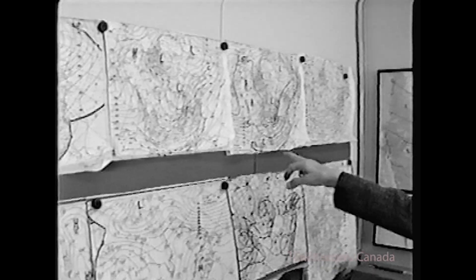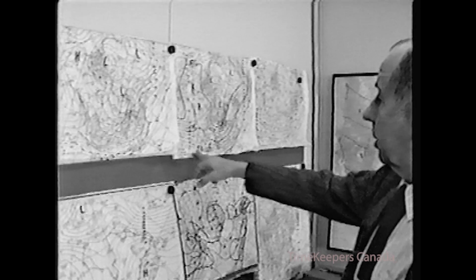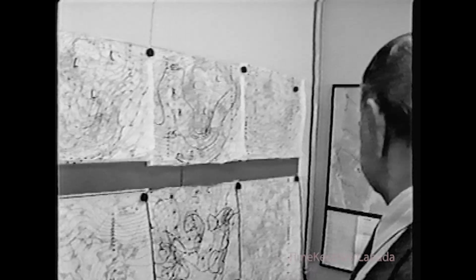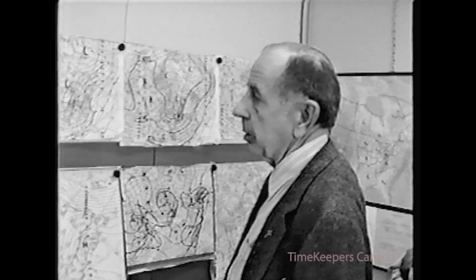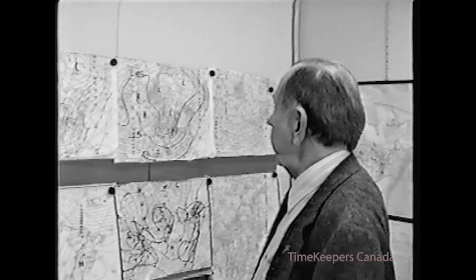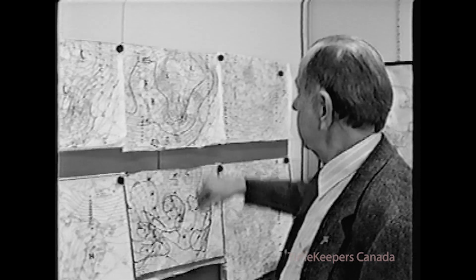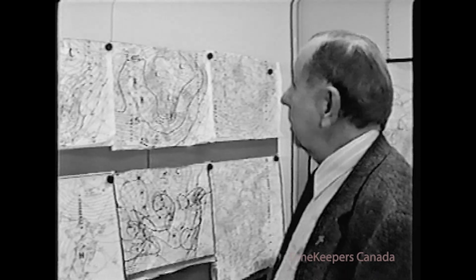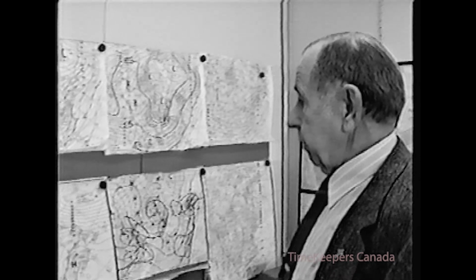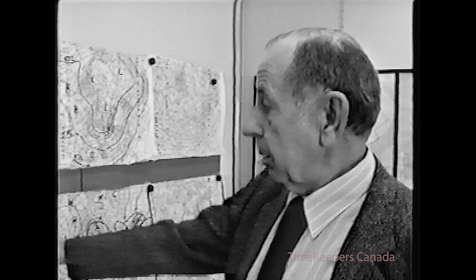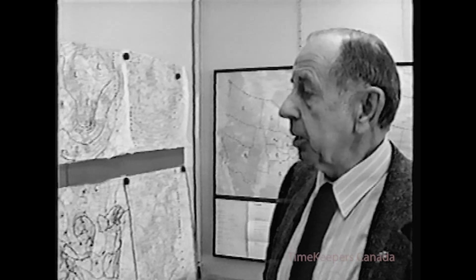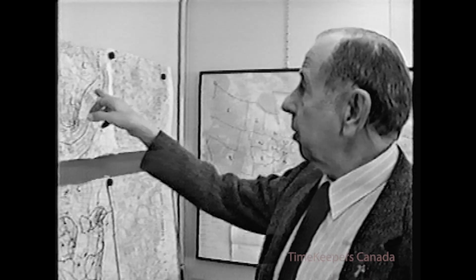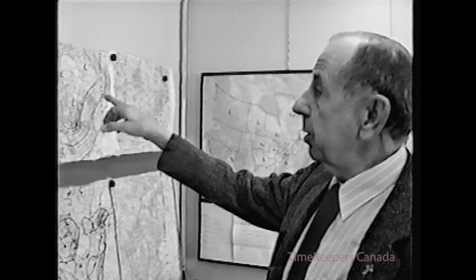That means you go still higher — 500 millibars, which is about 18,000 feet. You've got a slightly different pattern again. If you notice, for instance, on the surface map, one of the low pressures in the north there is showing, but it's a much more intense low when you get up higher.